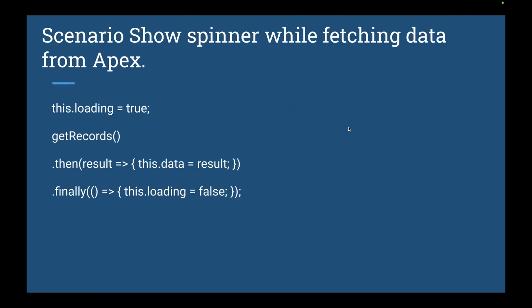The next question is LWC related — we need to show a spinner while fetching data from Apex. You set a loading property to true before calling getRecord, then assign the result data, and finally set loading to false after the data is fetched. If you don't set it to false, the spinner will keep appearing on screen.